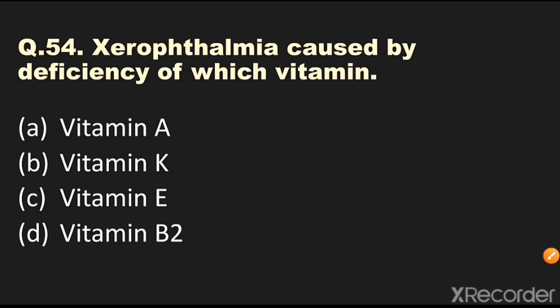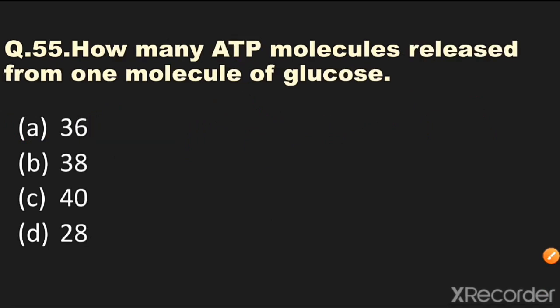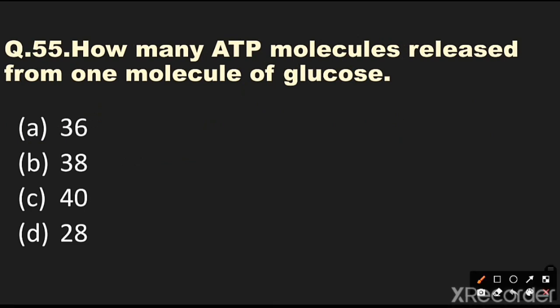Question number 55: How many ATP molecules are released from one molecule of glucose? Options are 36, 38, 40, or 28. The answer is 38 — 38 ATP molecules are released from one molecule of glucose.